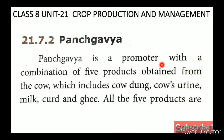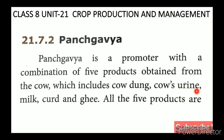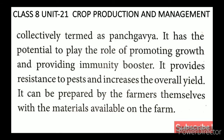Panchakavia is a promoter with a combination of five products obtained from the cow, which includes cow dung, cow urine, milk, curd, and ghee. All five products are collectively termed as panchakavia. It has the potential to play the role of promoting growth and providing immunity as a booster.